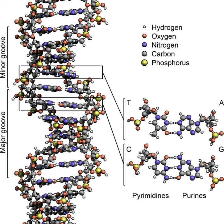Many mutagens intercalate into the space between two adjacent base pairs. These molecules are mostly polycyclic, aromatic, and planar molecules and include ethidium, proflavin, daunomycin, doxorubicin, and thalidomide. DNA intercalators are used in chemotherapy to inhibit DNA replication in rapidly growing cancer cells. In order for an intercalator to fit between base pairs, the bases must separate, distorting the DNA strands by unwinding of the double helix.